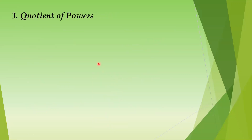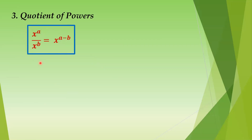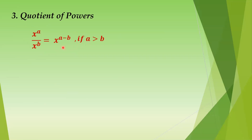Number 3: we have quotient of powers. This is x raised to a over x raised to b — related to product of powers. You have x raised to a divided by x raised to b, equal to x raised to a minus b. That is the general formula. In number 2 you added; here it is subtraction. There are actually three properties under this.